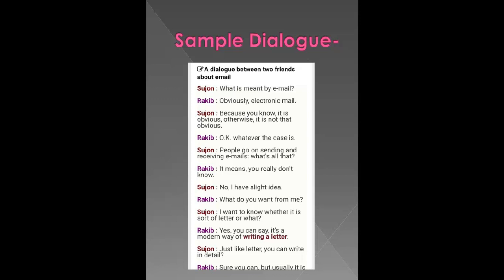After Sujon says his portion, then Rakib says 'obviously electronic mail.' Again we write the name of the second speaker, give a colon, and write what exactly Rakib has spoken — the exact words. That is how the whole dialogue goes on. One after the other we keep writing the name and the portion they have spoken. This is just a sample.